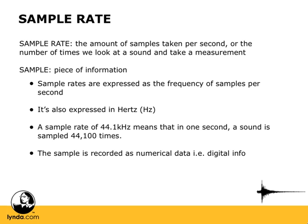With audio, we need to take a lot of samples to get a pretty accurate picture — there's a lot of things going on, a lot of changes. Sample rates are expressed as a frequency of samples per second, so they're expressed in hertz. We take a lot of them. At a sample rate of 44.1 kilohertz, in one single second we're sampling that sound 44,100 times. So that's a lot of looks.